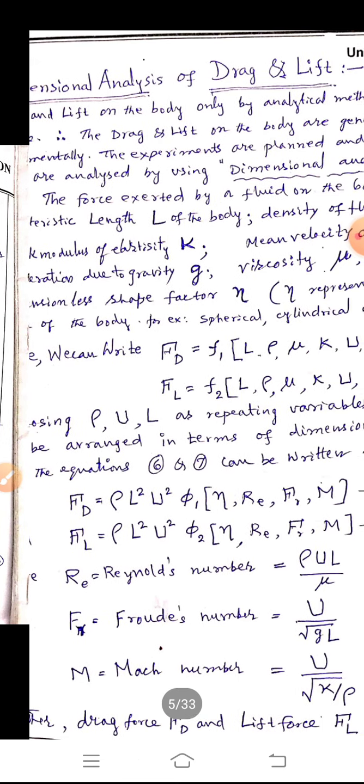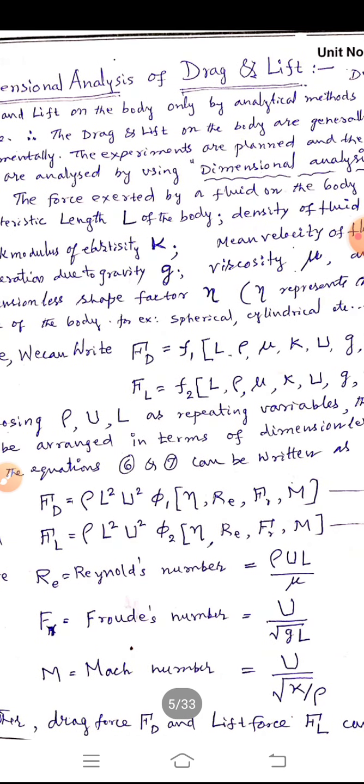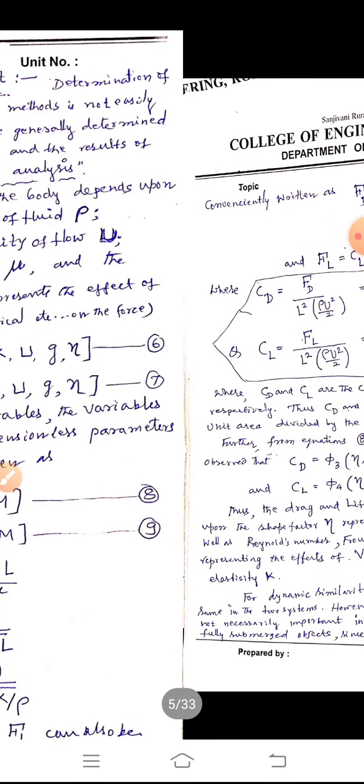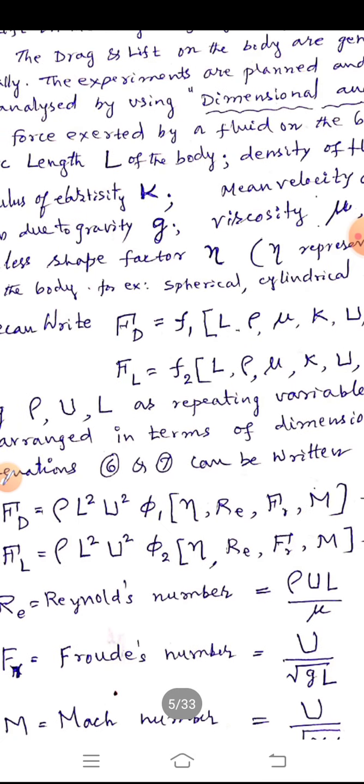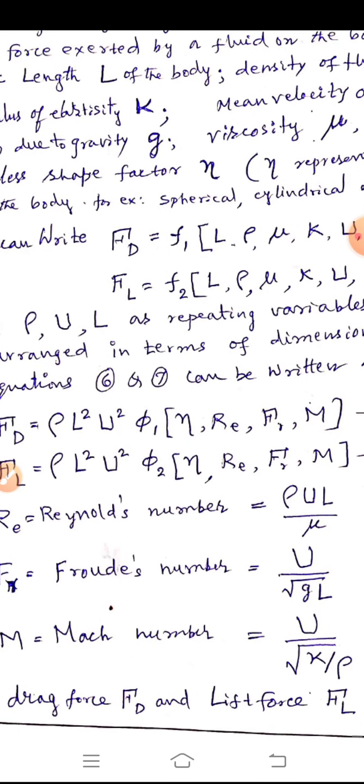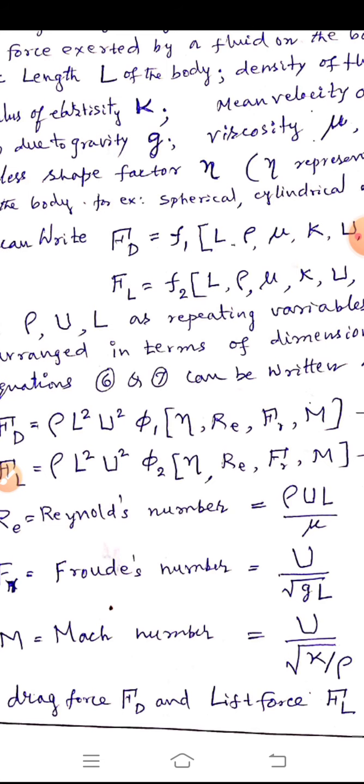Now, using ρ, U, L as repeating variables, the variables can be expressed in terms of dimensionless quantities, known as Reynolds number, Froude number and Mach number, which I have already studied in fluid mechanics 1. Therefore, Reynolds number can be written as ρUL/μ, Froude number U/√(GL), whereas Mach number U/√(K/ρ).